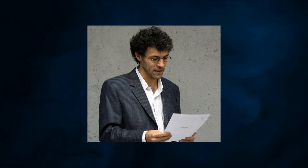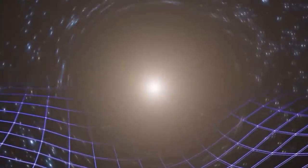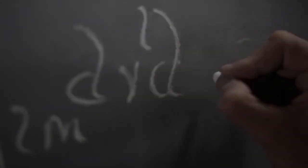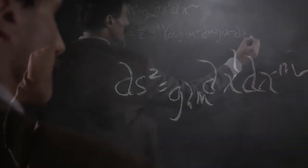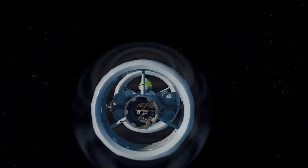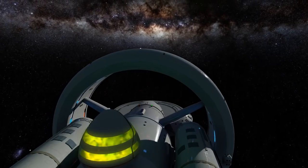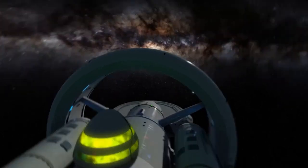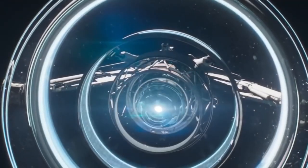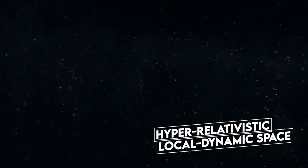Alcubierre, who is an avid Star Trek fan, theorized that it was possible to transport a volume of flat space inside a bubble of curved space. So the Alcubierre model of a warp drive would contract and twist space-time in front of it and create a bubble. This bubble of curved space was called the hyper-relativistic local dynamic space.